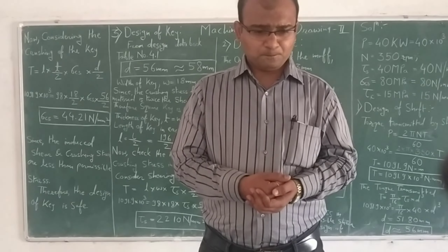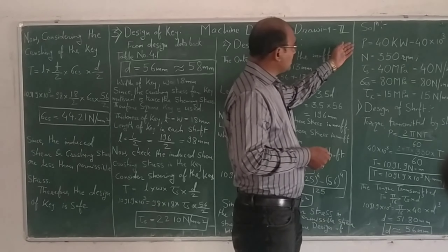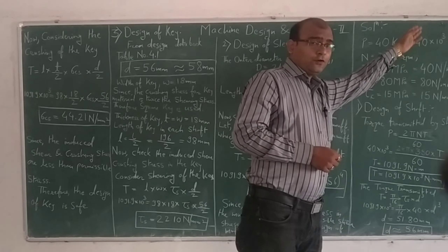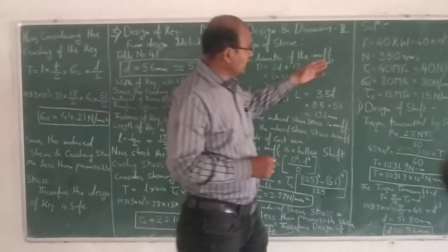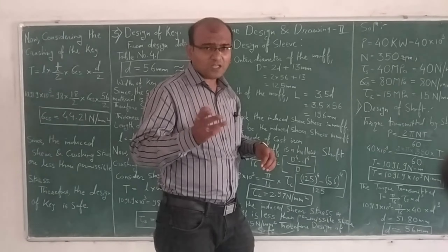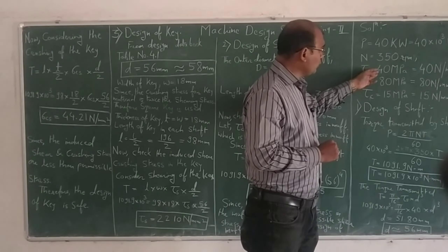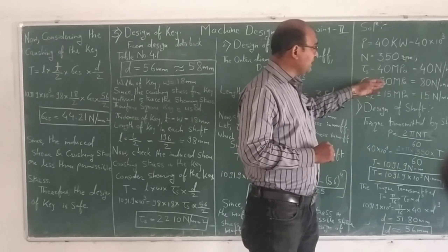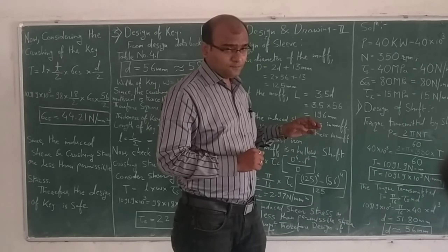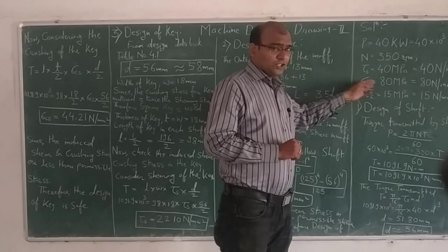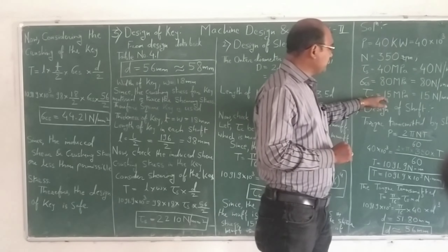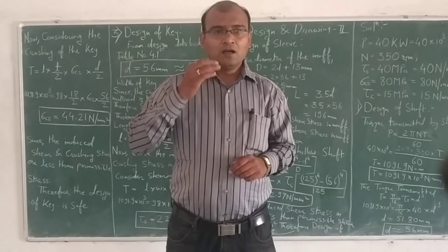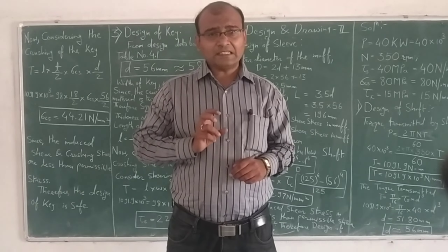The material of the muff is cast iron, for which the allowable shear stress may be assumed as 50 MPa. From the given conditions: power P = 40 kW = 40 × 10³ W; speed N = 350 RPM; shear stress for shaft τ_s = 40 MPa; crushing stress σ_c = 80 MPa; shear stress for cast iron τ_C = 15 MPa. We will now calculate the design of muff coupling, which includes design of shaft, design of muff, and design of key.